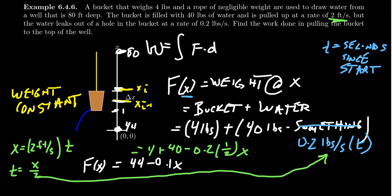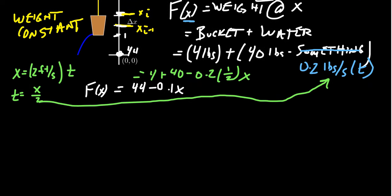So now we're in a position where we can set up our integral that we need to compute. The work is equal to the integral of force. Force is going to be 44 minus 0.1x. That's the weight. Then the distance it has to travel is dx. Now we're left with the bounds. What are the bounds of integration? We have to go from where x can live. x could be at the bottom of the well, which represents x equals 0. It can go to the top of the well, which would be x equals 80 feet.